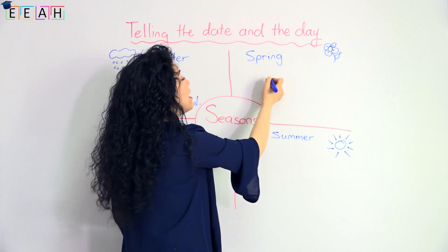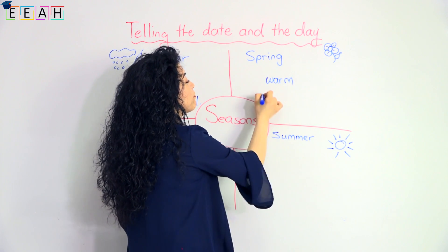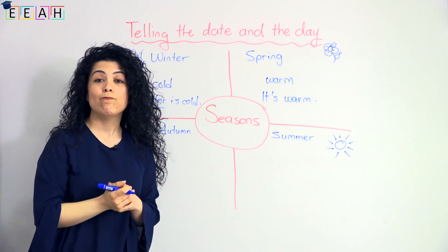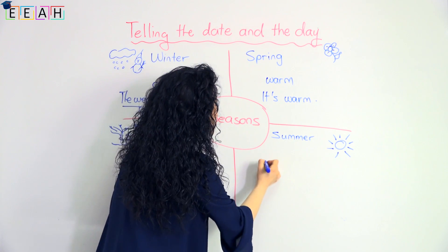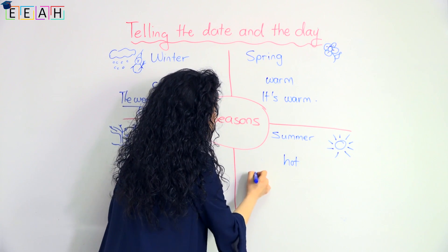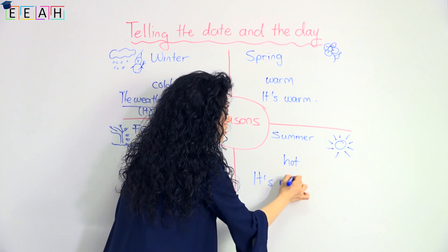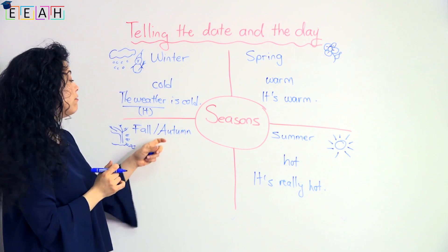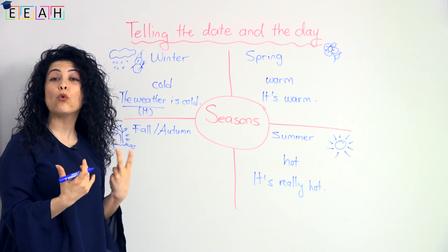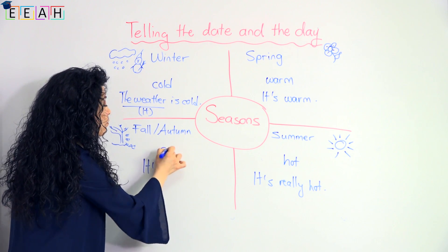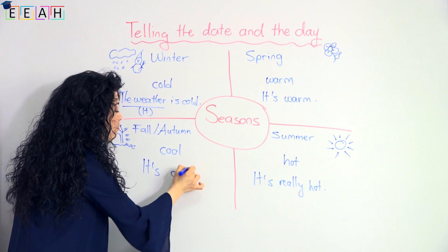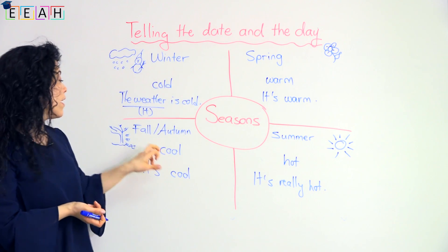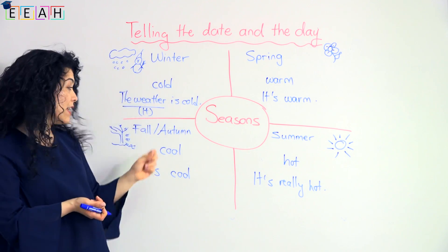Summer is really hot. In summer the weather is really hot. The fourth season is autumn, or fall. It is cool. So four seasons: winter, spring, summer, and autumn — or you can also say fall.